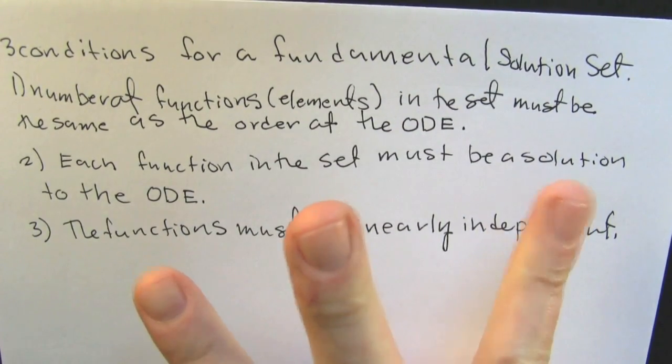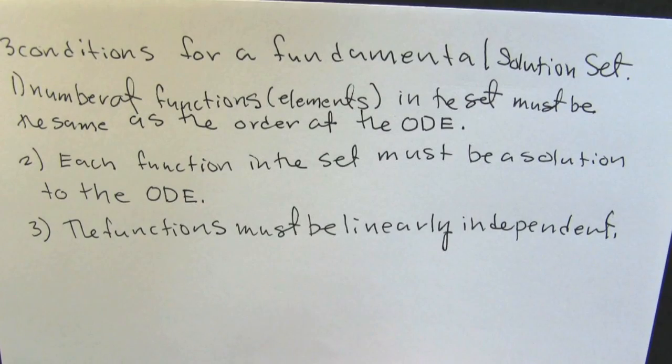Three things need to happen to be a fundamental set of solutions. The number of solutions or elements in the set must be the same as the order of the ODE. Each of the functions in the set must be a solution and the functions need to be independent.